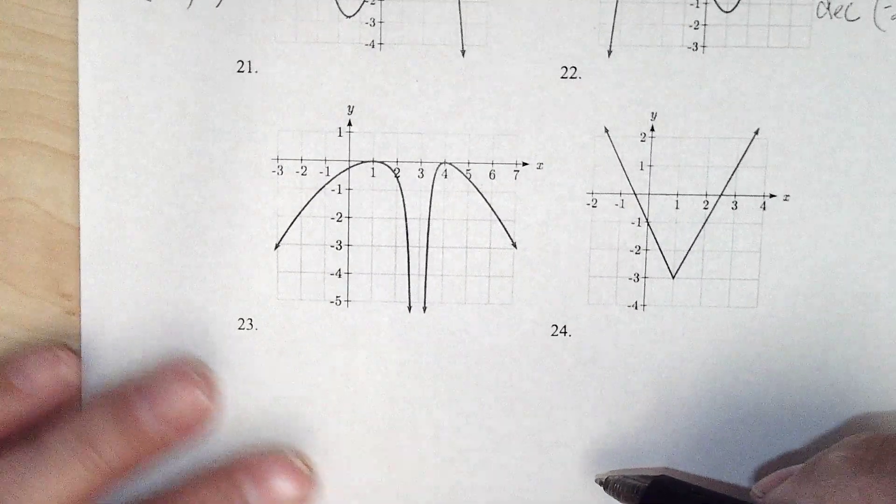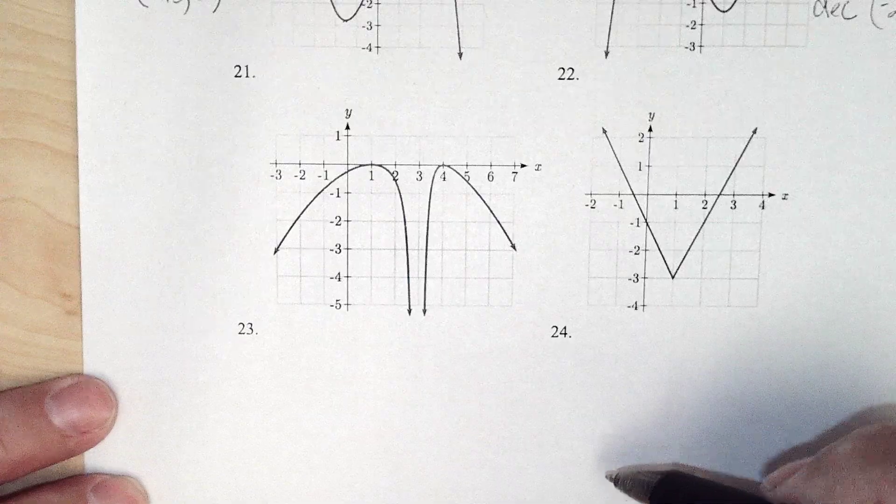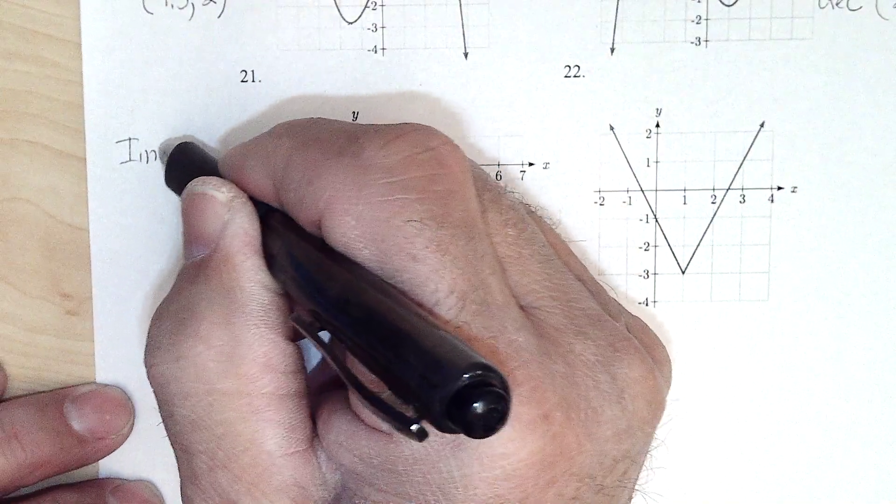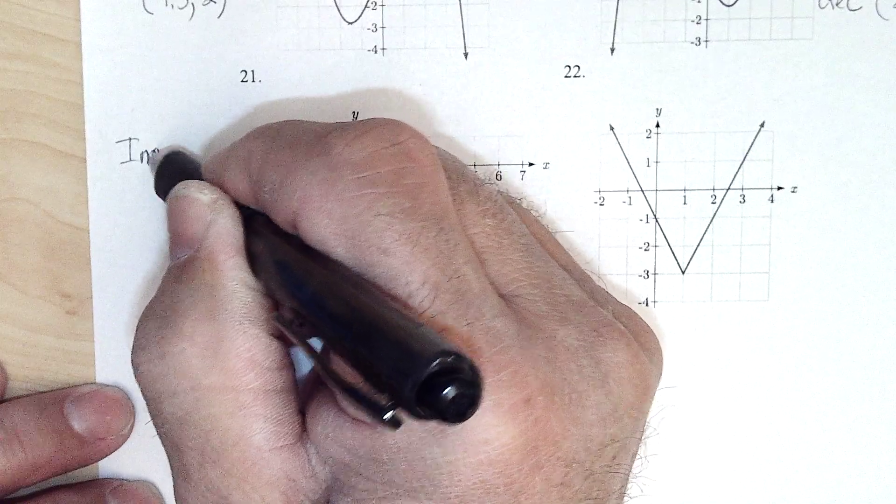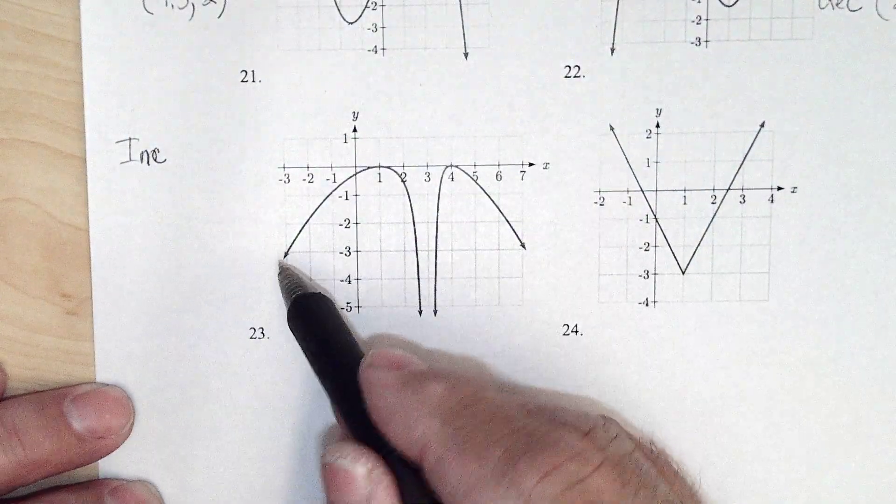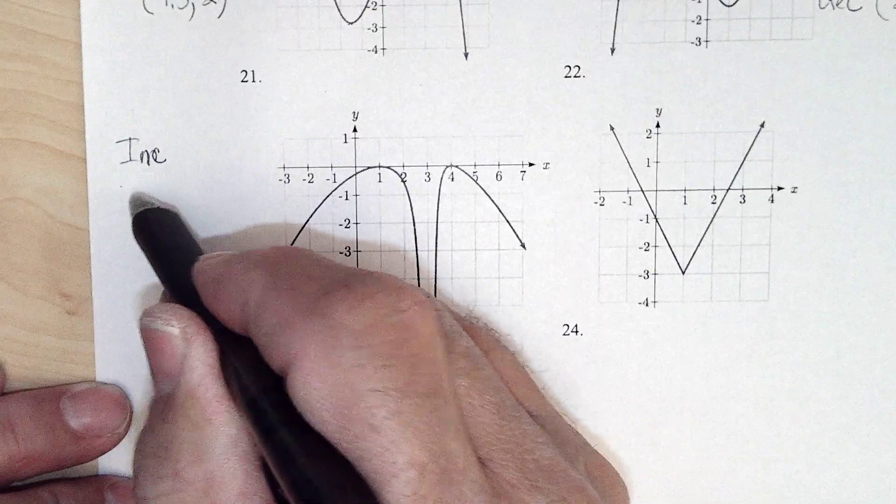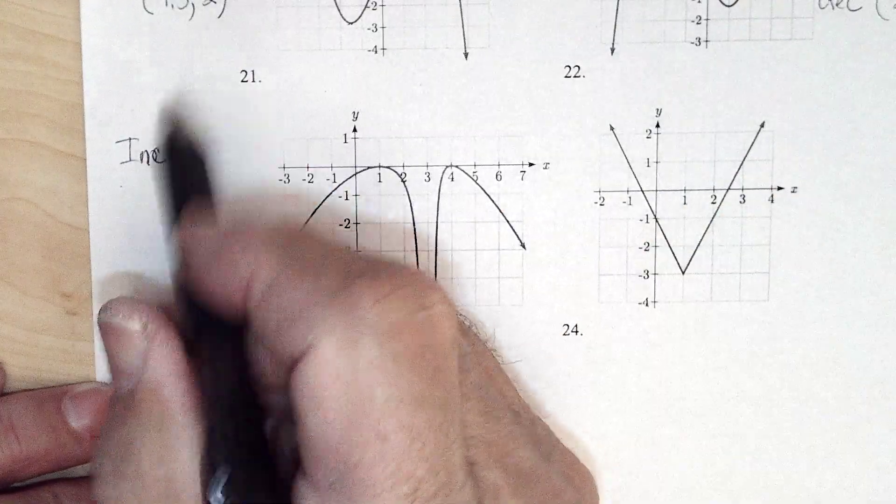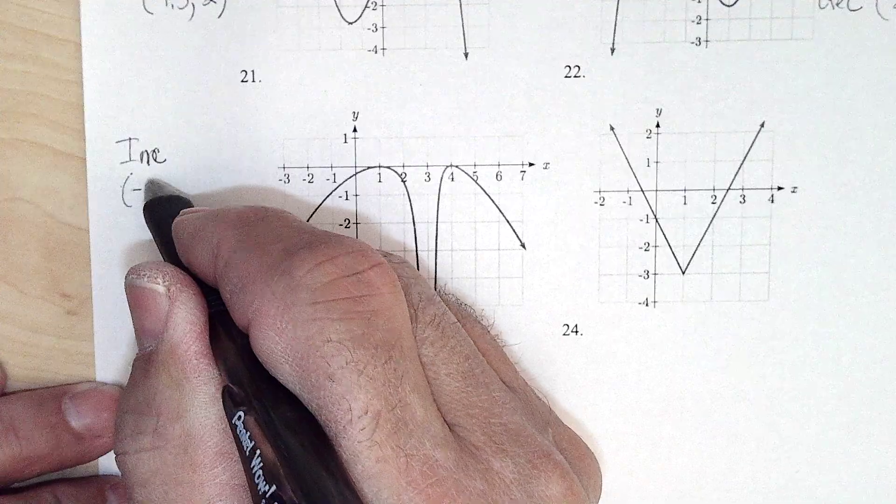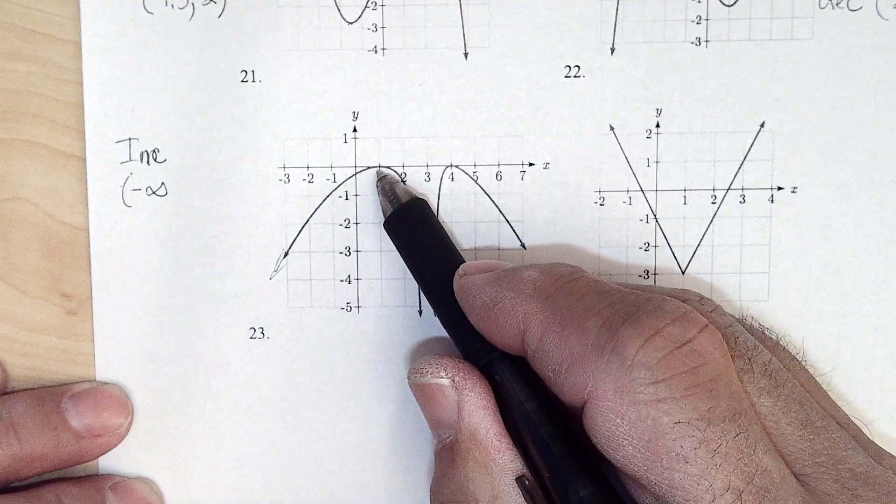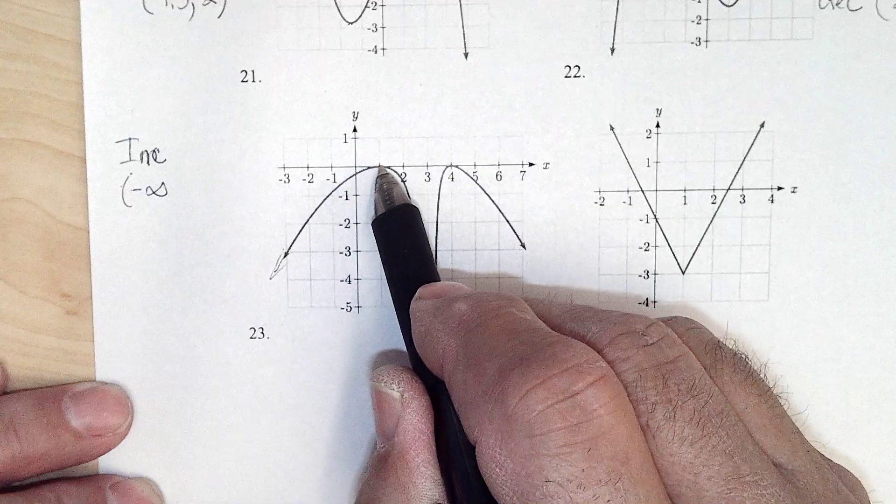Now I disagree with the answer book on this one. It looks like it starts off increasing. This arrow tells me it goes on forever, so I'm going to say from negative infinity it's increasing all the way till we get to an x value of 1.